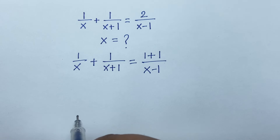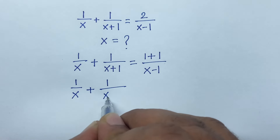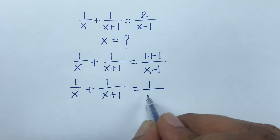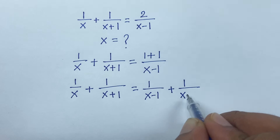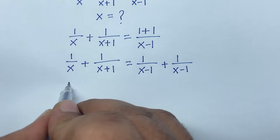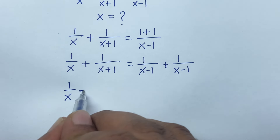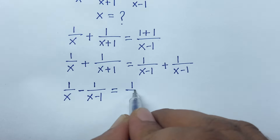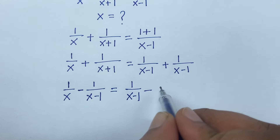So the equation becomes: 1 over x plus 1 over x plus 1 is equal to 1 over x minus 1 plus 1 over x minus 1. Now I move one term to this side — since it's positive, it becomes negative 1 over x minus 1, which equals 1 over x minus 1 minus 1 over x minus 1.